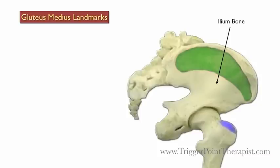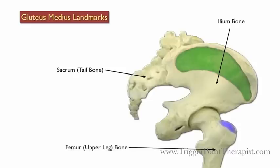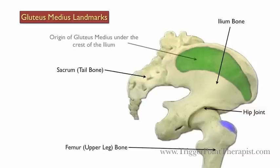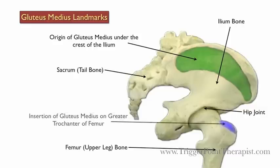Here are the landmarks for the gluteus medius: the ilium, the sacrum, the femur, and the hip joint. The origin of the gluteus medius lies under the crest of the ilium, and the insertion is on the greater trochanter of the femur.